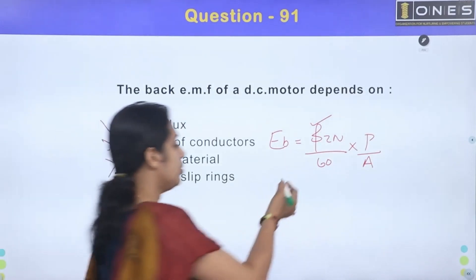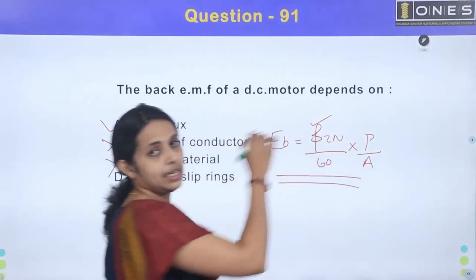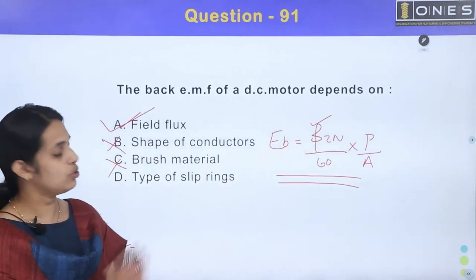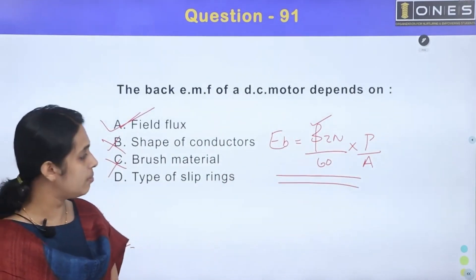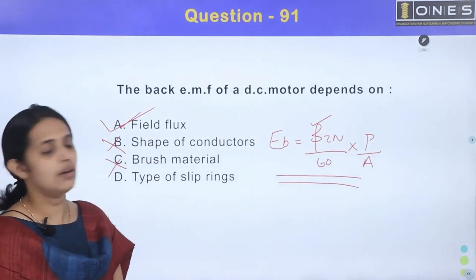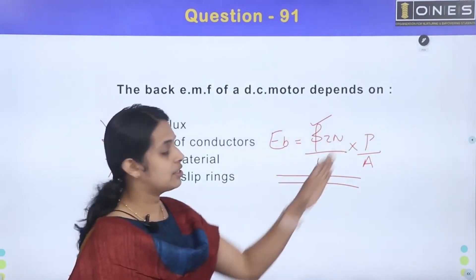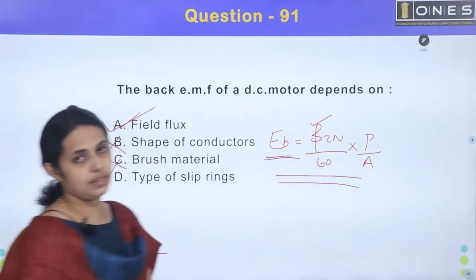If we look at this equation, we have the generator. Using the EMF equation, we have back EMF. Back EMF is also the generating action. So, 5 divided by 60, into P divided by A, is the back EMF equation.